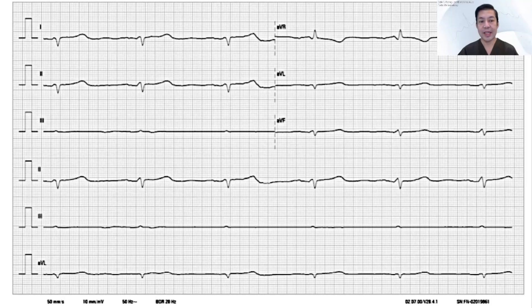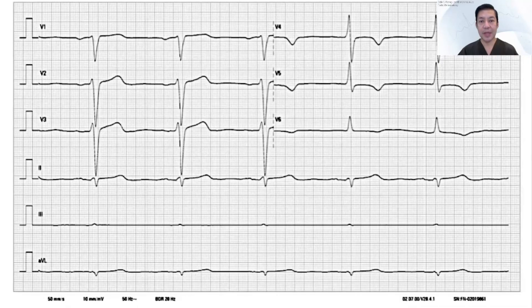This is the ECG tracing showing the limb leads: lead 1, lead 2, lead 3, AVR, AVL, and AVF. Precordial leads: V1, V2, V3, V4, V5, and V6.